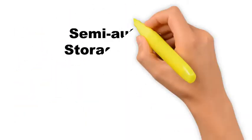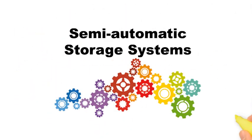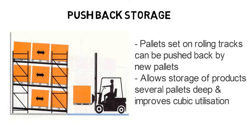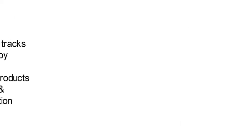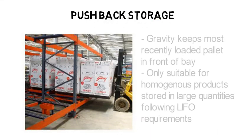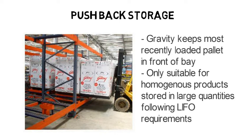Besides manual storage systems, there are also some semi-automatic storage systems, which do not run on electricity but instead rely on simple mechanical design to achieve an overall higher efficiency level. In the push-back storage system, pallets are set on rolling tracks and pushed back by new pallets. This system allows for storage of products several pallets deep and improves overall cubic utilization. A push-back storage system operates like a vending machine — gravity keeps the most recently loaded pallet in front of the bay, and the next pallet moves to the front once the first has been removed. If accessed from only one side, it is suitable for homogeneous products stored in large quantities following LIFO requirements.